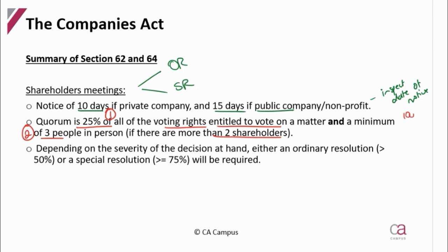If all shareholders are entitled to vote on the decision, it means 100% are entitled to vote, so 25% of the voting rights need to be present. Literally, if one shareholder has 25%, that person needs to be at the meeting and the meeting can take place with the voting rights quorum. However, there still needs to be the physical persons quorum — so they'll still need two more people, regardless of their percentage voting rights.